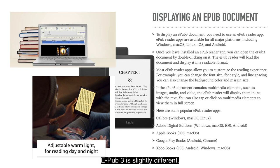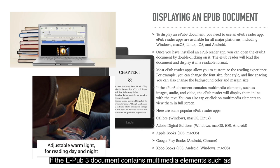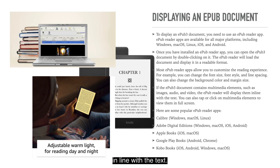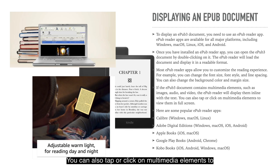EPUB3 is slightly different. If the EPUB3 document contains multimedia elements such as images, audio, and video, the EPUB reader will display them inline with the text. You can also tap or click on multimedia elements to view them in full screen.